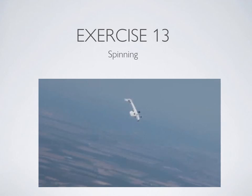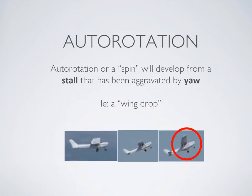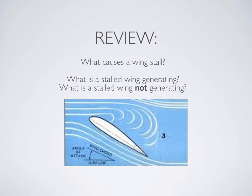A spin can result from an aggravated stall and develop due to one wing being more stalled than the other. Once a spin is developed, we call it autorotation. As a quick review: a wing is said to be stalled when it is no longer producing lift and is thus generating an excess of drag.